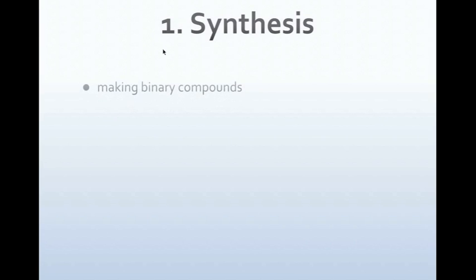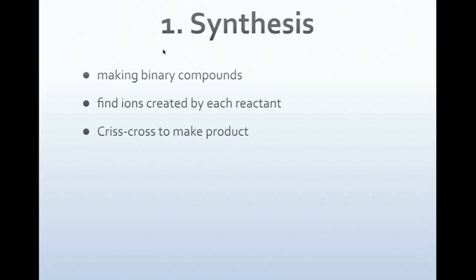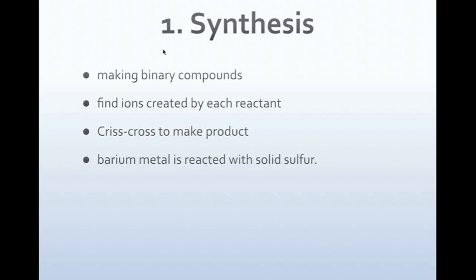Our first reaction is a synthesis reaction — that's when many compounds or elements combine to make one compound as a product. A synthesis reaction is going to make a binary compound, starting with just two elements. We have to find the ions created by each reactant and crisscross those to make our product. A synthesis reaction is just going to be between an element plus an element.